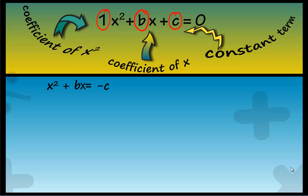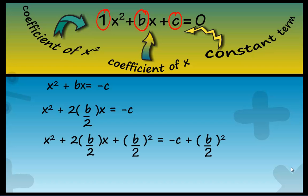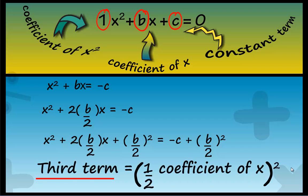The next thing to do is to make the LHS a perfect square: x square plus 2 into b by 2 into x equals minus c. Therefore x plus b by 2 the whole square equals minus c plus b by 2 the whole square. We added b by 2 the whole square so that the LHS becomes a perfect square. To get the third term of LHS, we add the square of half the coefficient of x.